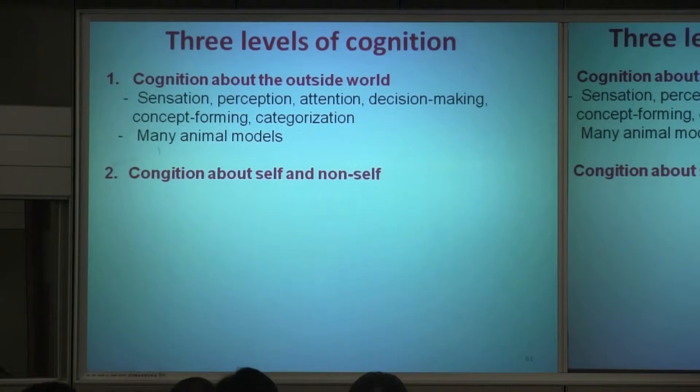Even fruit flies have a sophisticated cognitive process. Honey bees have a good cognitive process. So you can study a lot of cognition at this level. But they are all more interesting because we're understanding our brain. So there's a cognition about self and non-self, and that's more complicated.